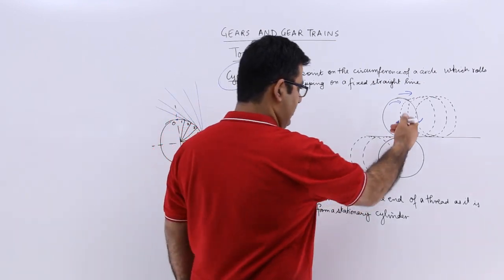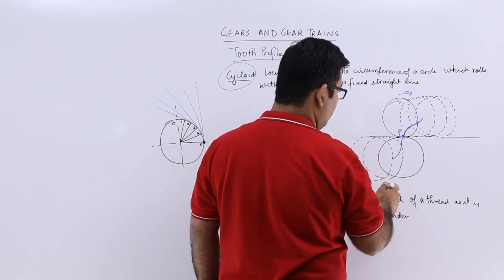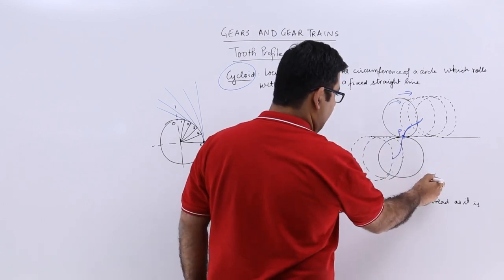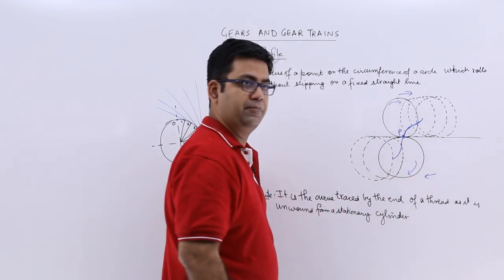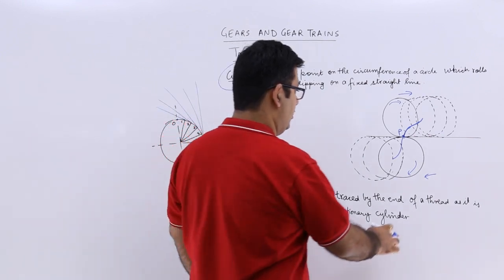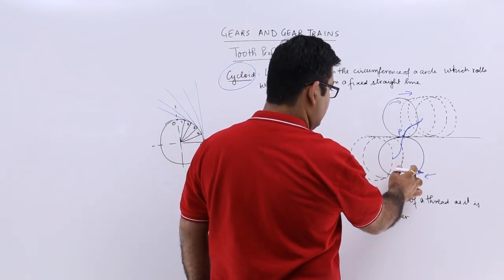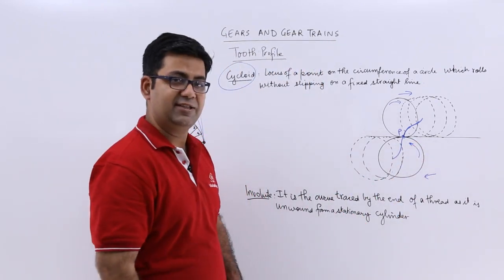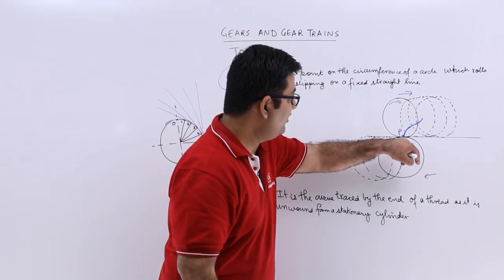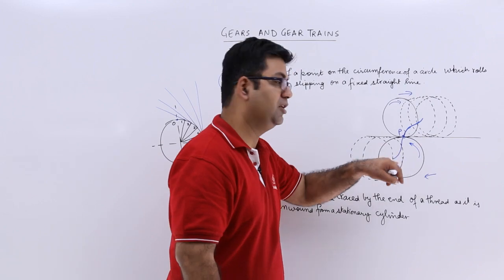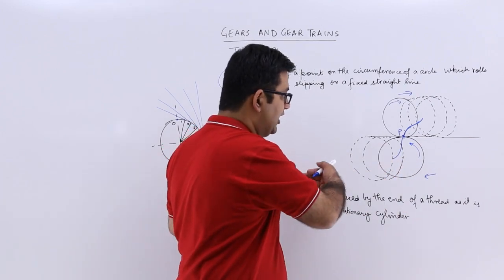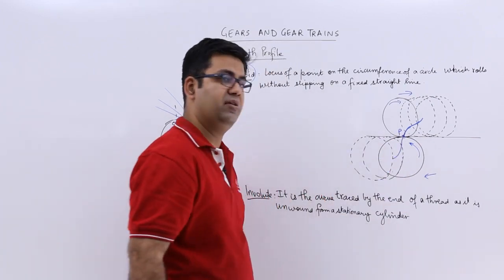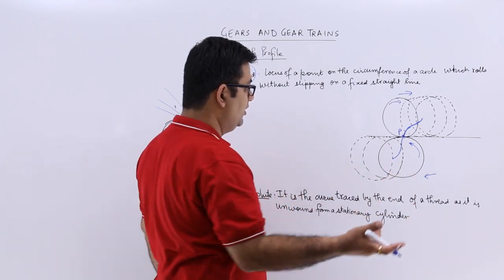Similarly, if you look at the bottom circle, this bottom circle is rolling in this particular direction, not in this but in the opposite direction like this. So if you trace the locus of this very point with respect to the bottom circle, rolling in this direction, you get this kind of a curve. So again this becomes a cycloid.